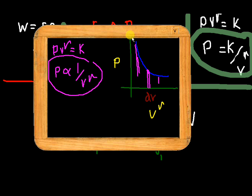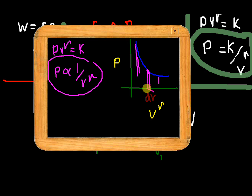So, P is inversely proportional to V raised to gamma. When we plot the graph of this relation, we get an inversely proportional graph. So we have to find the work.